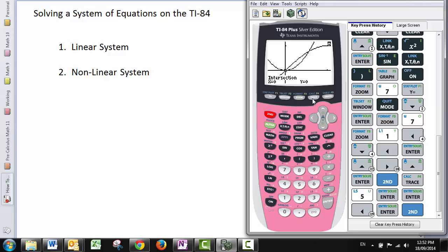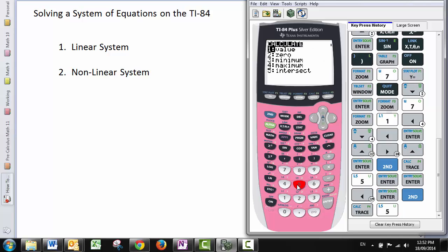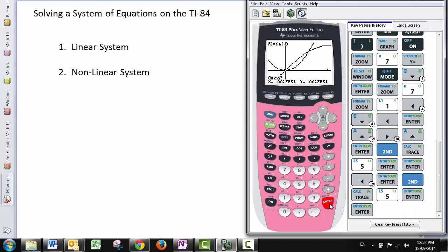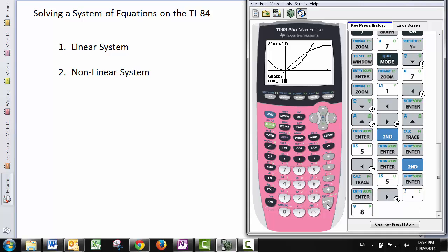To get the second point of intersection, we go in here again. Intersect, first curve, second curve. Something you can do here for your guess rather than scrolling to the right, if you know roughly what this number is for this X value, I think it's around 0.8. I'm just going to type 0.8 as my guess and send the calculator off there. Look at that. It's 0.8767 and 0.76. So it's like with tracing where you can tell it which X value to use. You can also do that for your guess.